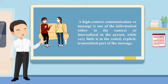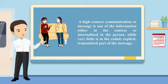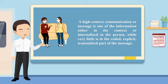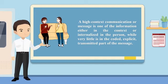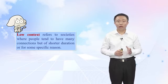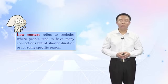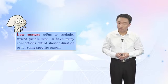A high context communication or message is one where the information is either in the context or internalized in the person, while very little is in the coded, explicit, transmitted part of the message. Low context refers to societies where people tend to have many connections but of shorter duration or for some specific reason.